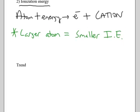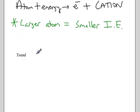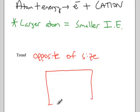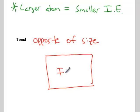So in other words, the trend is the opposite of the size trend. If you scratch out a rectangle for a periodic table, the ionization energy will get bigger exactly the opposite of the size. So, towards the top and towards the right.